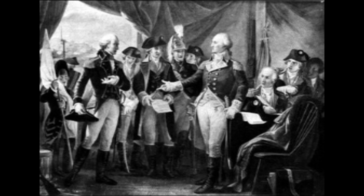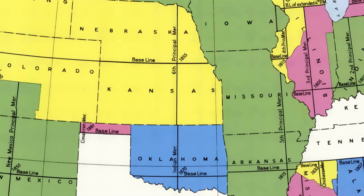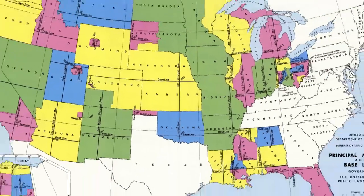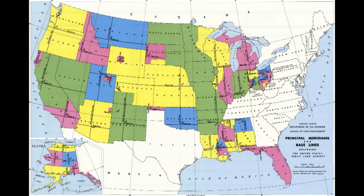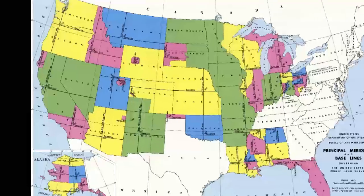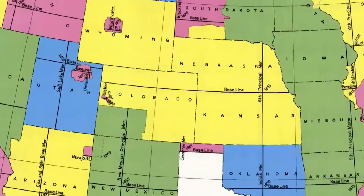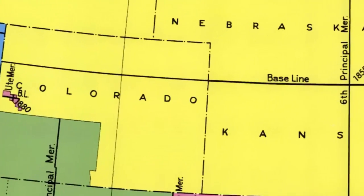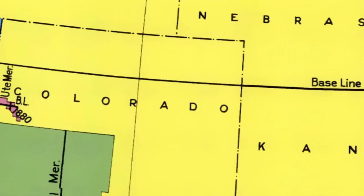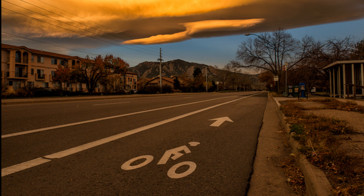We start by laying down a set of baselines and principal meridians. You'll notice that the Northeast was already settled, so it's not under this system, and Texas was its own nation, so it is not either. The rest of the country uses baselines that are parallel to each other going east to west, corresponding to latitude lines, and principal meridians corresponding to longitude lines. There is a baseline very close to the Colorado School of Mines, to the north in the town of Boulder, Colorado — locals know it as Baseline Road.